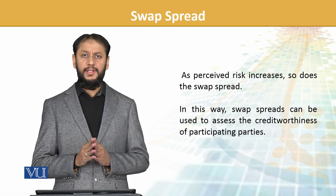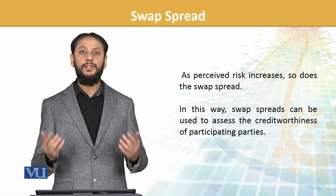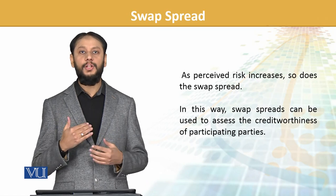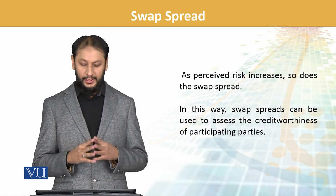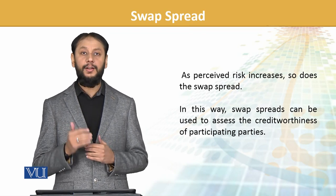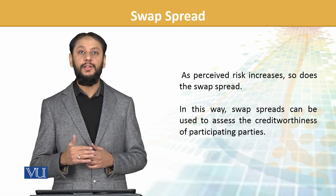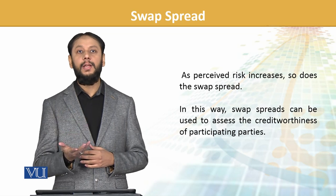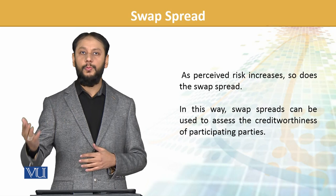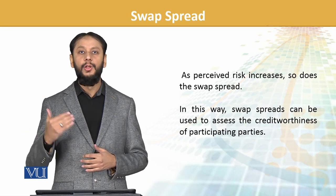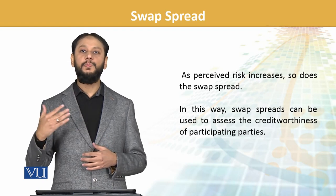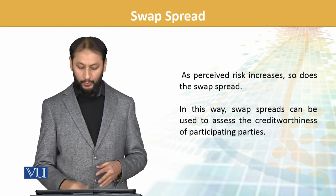So the perception is built into the rates. As perceived risk increases, so does the swap spread — जितना risk की perception ज़्यादा होगी, swap का जो spread होगा वो उतना बढ़ जाएगा. In this way, swap spreads can be used to assess the credit worthiness of the participants. When local participants are involved — whether an institution or an individual — their credit worthiness and risk perception will determine the spread rate.